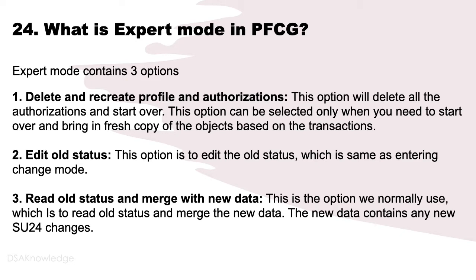What is expert mode in PFCG? Expert mode contains three options. Number 1: Delete and recreate profile and authorizations — this deletes all authorizations and starts over; use only when you need a fresh copy of objects based on transactions. Number 2: Edit all status — edit old status, same as entering change mode. Number 3: Read all status and merge with new data — this is the option normally used, reading all status and merging new data, which includes any new SU24 changes.